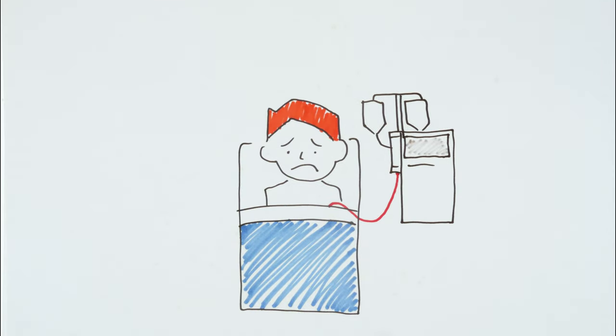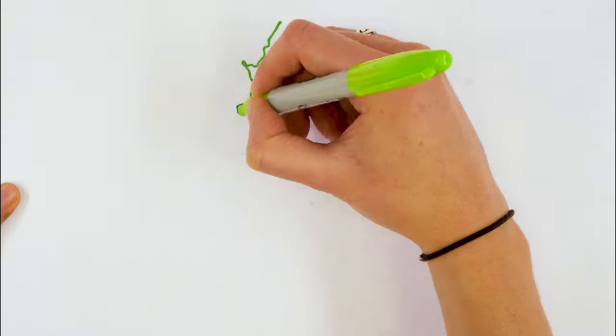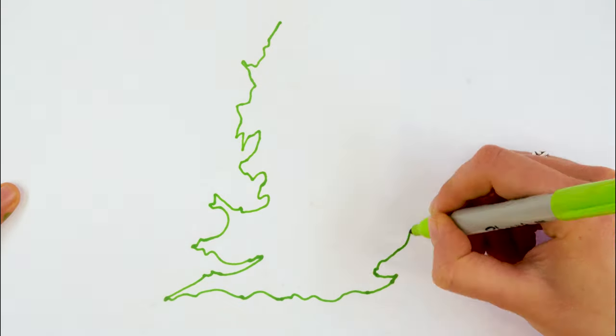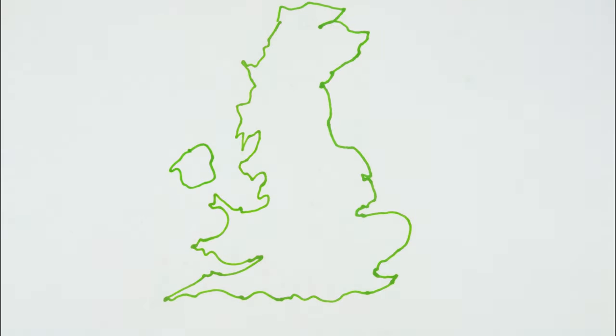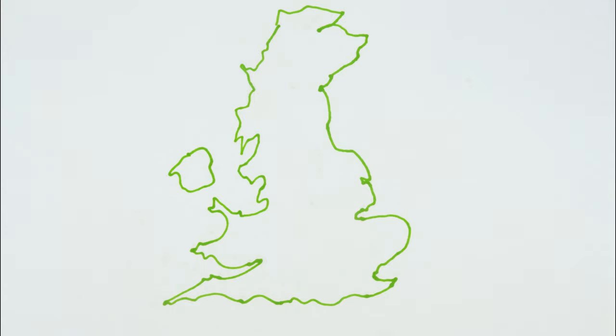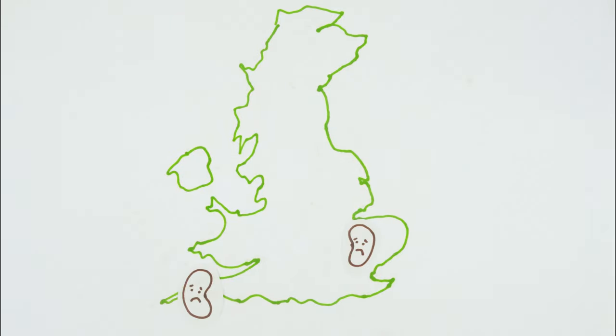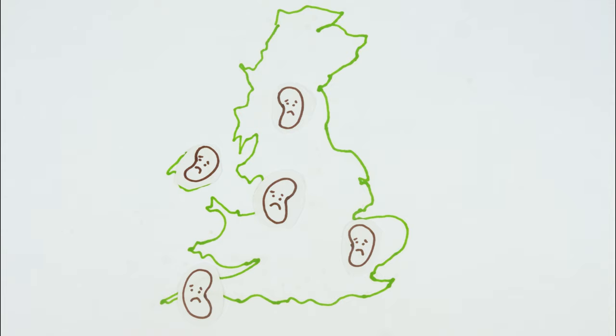Unfortunately, not everyone has the same access to transplantation across the UK. The time that it takes to get onto the transplant waiting list, the likelihood of receiving a transplant before starting dialysis, and the likelihood of a living donor being identified vary according to where patients live and their local hospital policies.